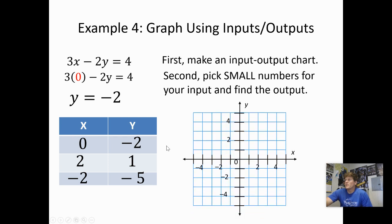Plot those values. 0 comma negative 2. 2 comma 1. Negative 2 comma negative 5. Connect those with our straight line. We're done.